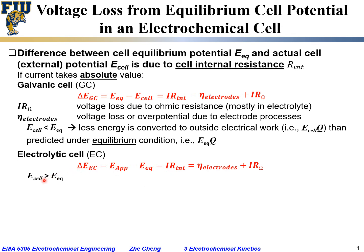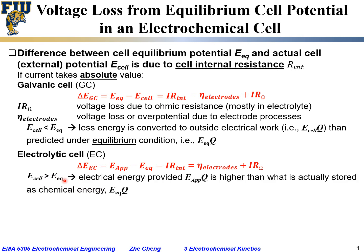This means the electrical energy provided — the applied voltage E_applied times total charge q — is higher than what is actually stored, which is the equilibrium cell potential E_eq times the total charge. This follows from physics: electrical work equals voltage times total charge transported.